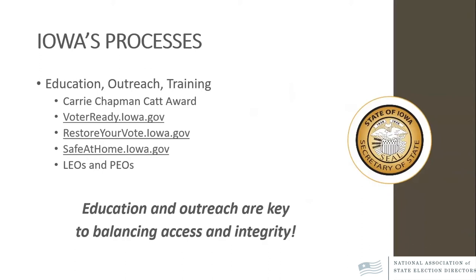We have our VoterReady website that helps unregistered persons understand what they need to do to register, the importance of voting, and how to determine where they'll vote. We also have our Safe at Home address confidentiality program. Our Restore Your Vote program is for persons formerly convicted of a felony who previously lost their right to vote and now are having their rights restored. We initiated a big educational program a year ago when the governor signed an executive order last August, working with several service groups throughout the state to reach those persons — whether they lost their right to vote a few years ago or many years ago — to understand their opportunities and how to register.